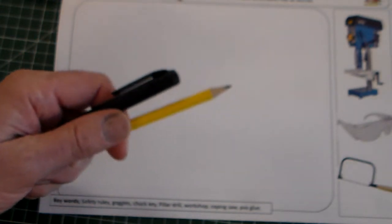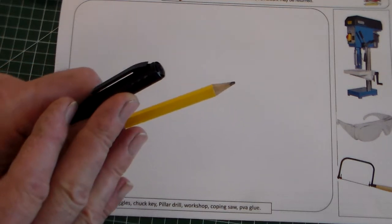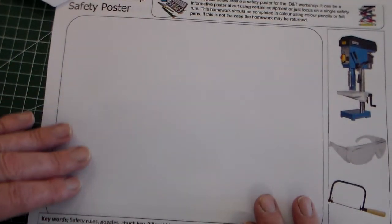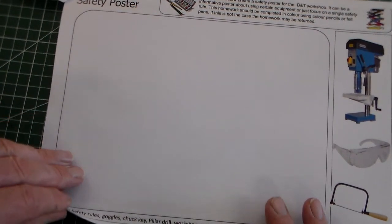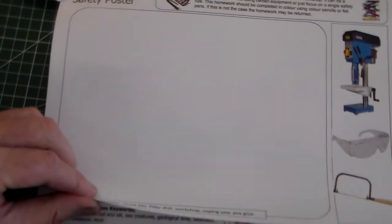So you need to use drawing pencil, you might use a fine liner. You should use paints or coloured pencils to complete an image here of a safety poster. You should aim to fill that in there and down the bottom here there's some key words to help you. So that is homework 2, design a safety poster for the D&T workshop.